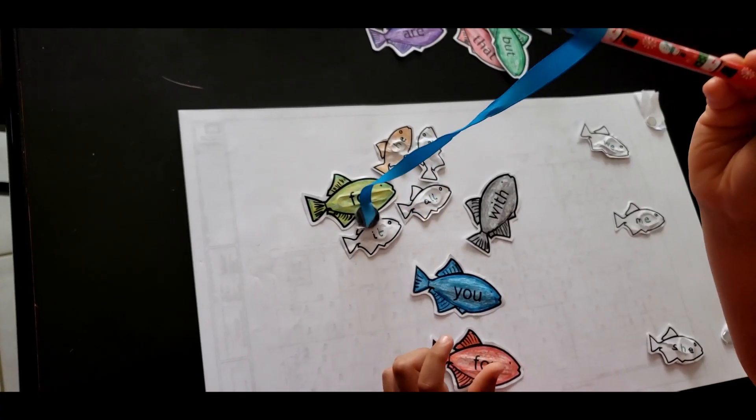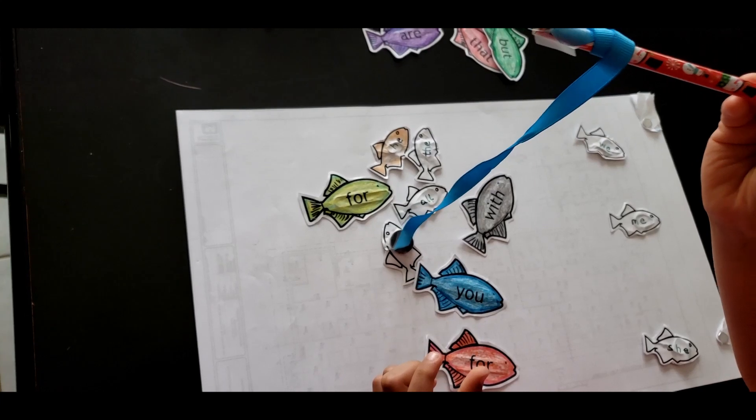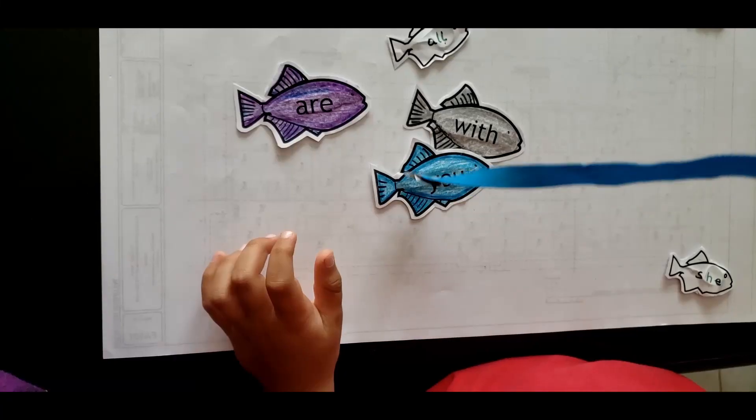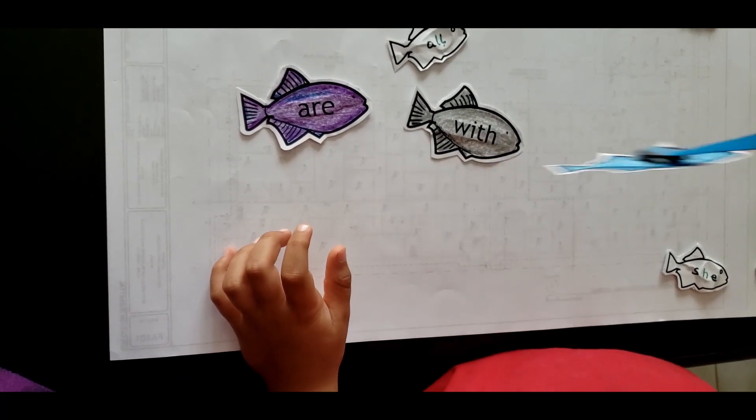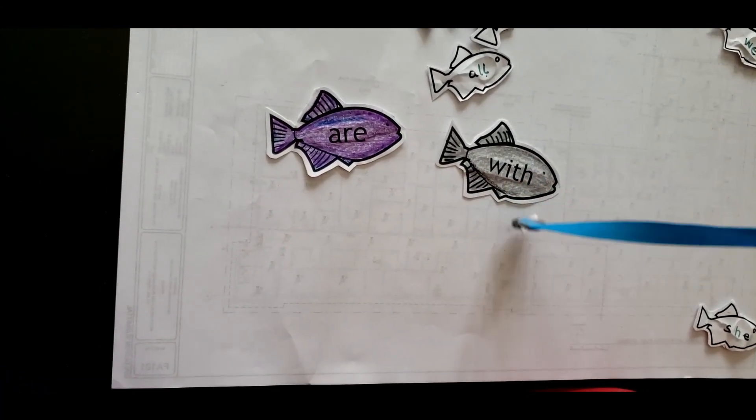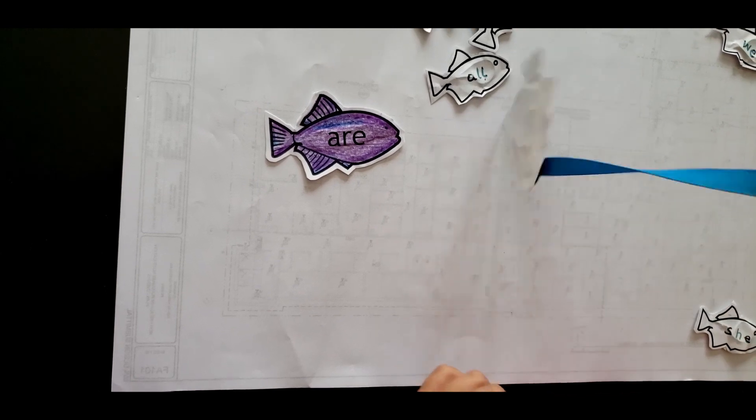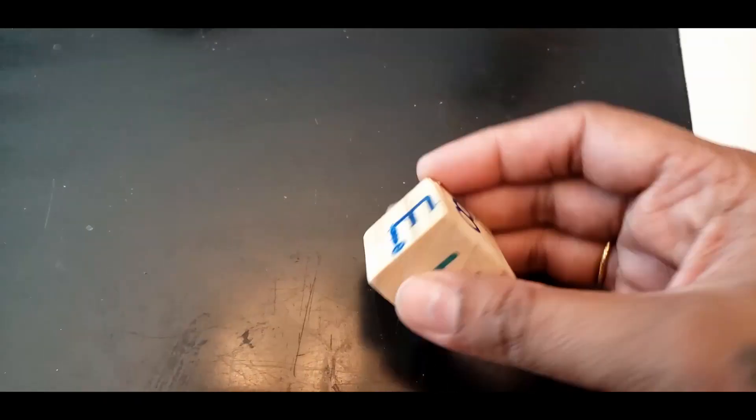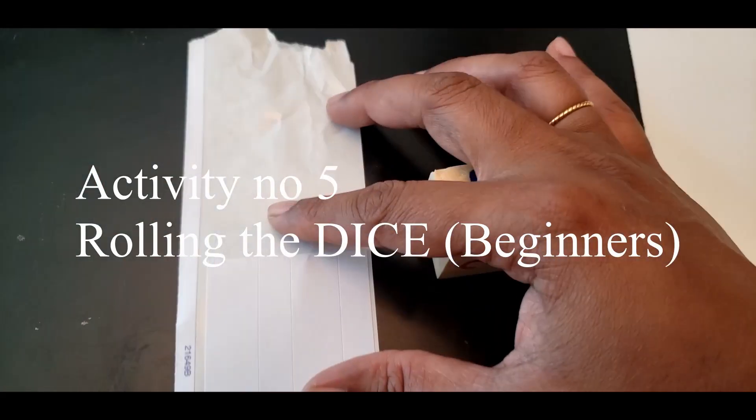I'm asking him to pick the sight words that I'm calling out. I've introduced very few sight words and repeated them. I have two 'for's, one 'you,' and one 'but,' then I say I want you to pick 'you,' and he goes ahead and picks the word. If he does it wrong, I correct him and put the fish back. This is a very fun activity.